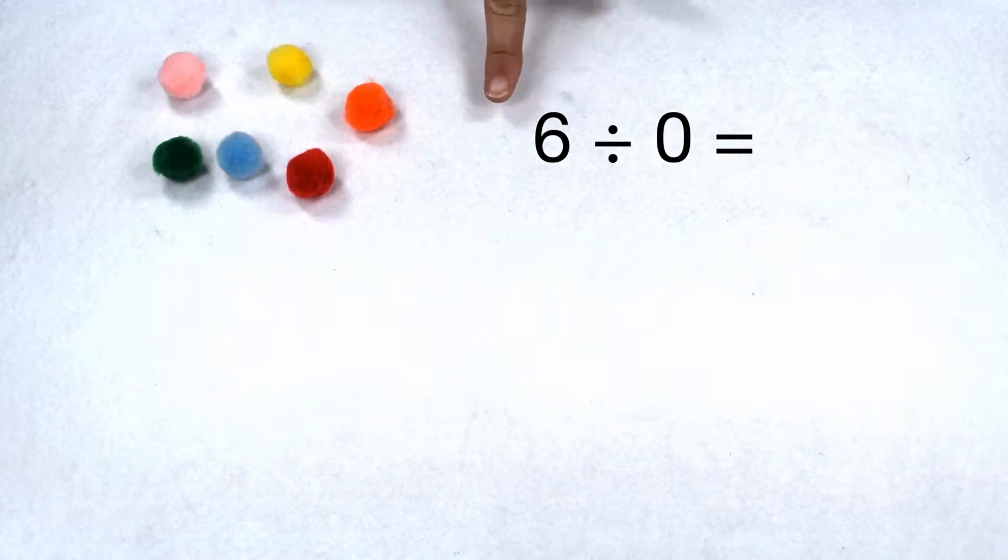This means we are solving six divided by zero. Six is my dividend, zero is our divisor.